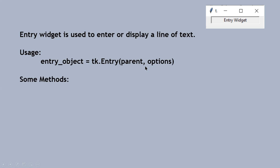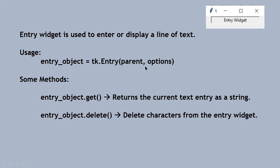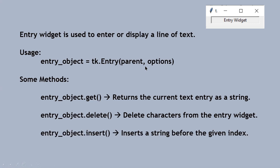Now I am going to cover some methods associated with the entry object. The first one is the get method, which returns the current text available on the entry widget. The second one is the delete method, used to delete some characters from the entry widget. The third one is the insert method, which is used to insert some string at a given index.